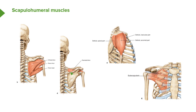Other scapulohumeral muscles running from the scapula to the humerus include a muscle coming from the infraspinous fossa, inferior to the spine of the scapula, passing to the greater tubercle of the humerus. We also have teres minor and teres major, all running from the scapula to the humerus. On the anterior surface, subscapularis lies between the scapula and the chest wall, running towards the lesser tubercle of the humerus.